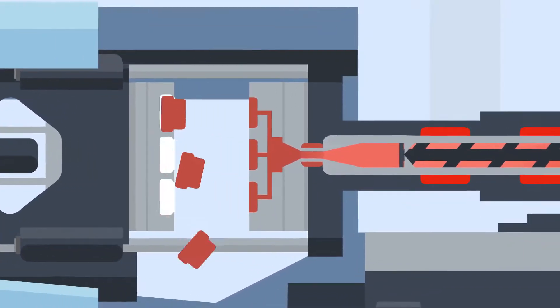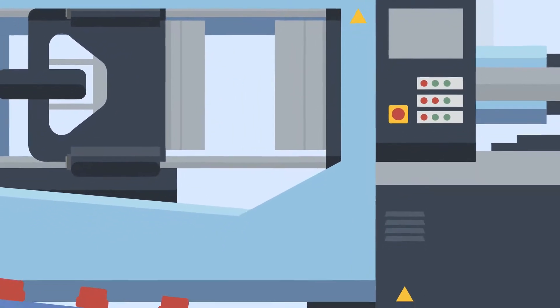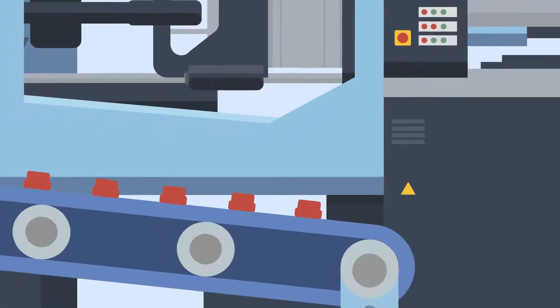Once the set cooling time has passed, the mould opens and ejector pins or plates push the new parts out of the tool. These then fall onto a conveyor belt ready to be finished and packed.